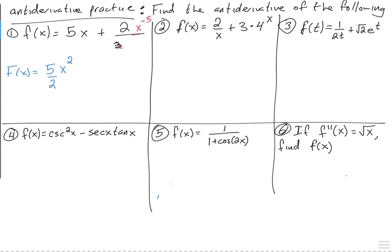So then what would that be, the anti-derivative of that? So if I rewrite this, this would be plus 2/3, and then x to the — if I add 1, what would I get? Negative 4. Negative 4, and then divide it by negative 4. So if we simplify a little bit, this would be 5/2 x squared, and then minus — the 2 and the 4 reduce to 1 and 2 — so that would be 1 over 6, and then x to the 4th on the bottom.